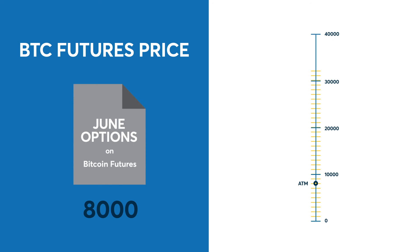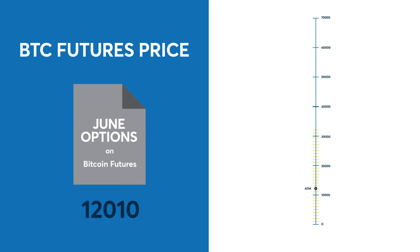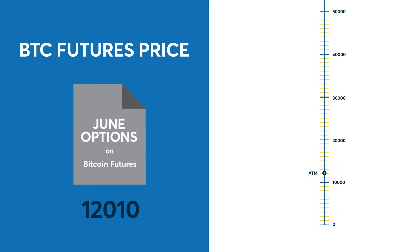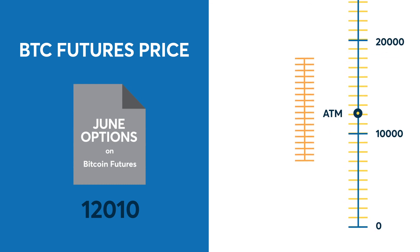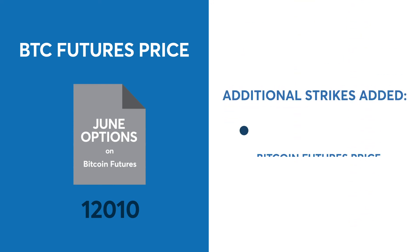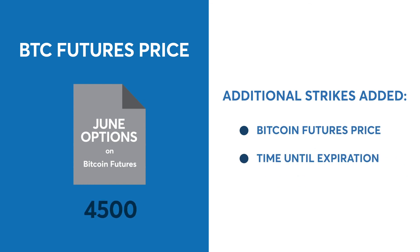As the price of the Bitcoin futures contract moves, CME Group will list additional strikes at the appropriate intervals. Fast-forwarding 4 months to May, let's assume the price of the Bitcoin futures contract had rallied above 12,000. 10,000-point intervals would have been added from the initial 40,000 up to 70,000. 1,000-point intervals would have been added from the initial 32,000 up to 48,000. Because these June options are within 2 months of expiration, strike increments of 500 and 100-point intervals will have been added near the price of the underlying Bitcoin futures. Additionally, if the Bitcoin futures price falls below 5,000 with less than 2 months until expiration, CME will add strikes at 50-point intervals.